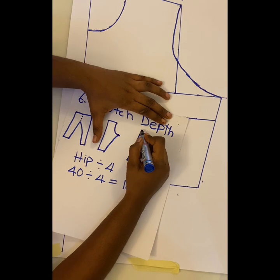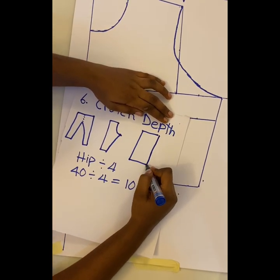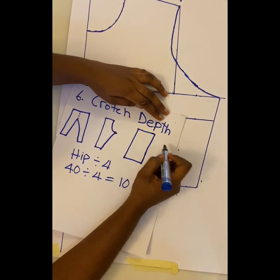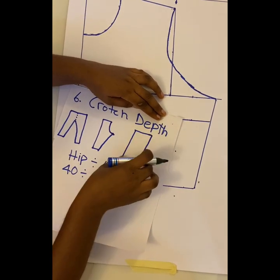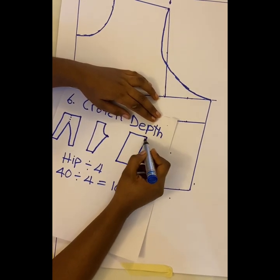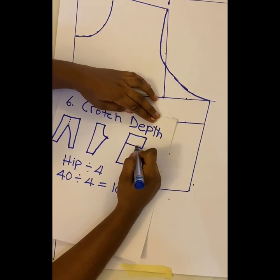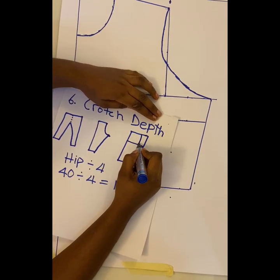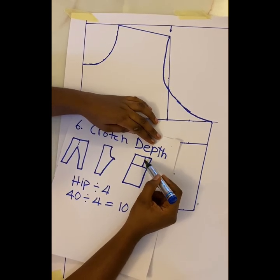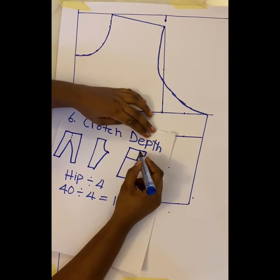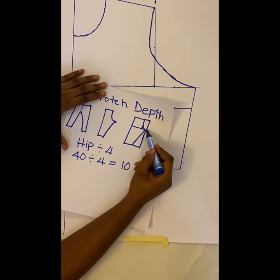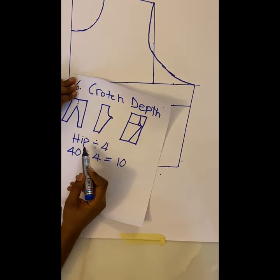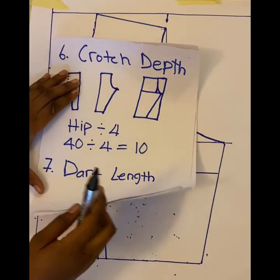I have a detailed tutorial on how to draft a trouser — the link is in the description box below. When drafting your trouser pattern with the fabric unfolded, this is your waistline, and you measure down from the waist to mark the crotch depth. Draw a straight line at that point — that straight line indicates your crotch depth. From there you mark your lap measurement, draw your curved line, and mark to the hem to complete the trouser.